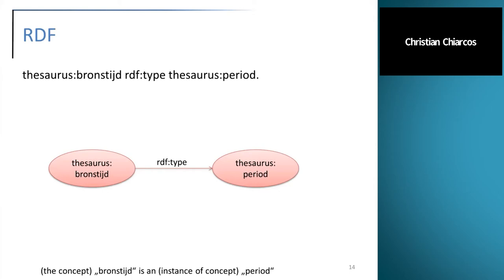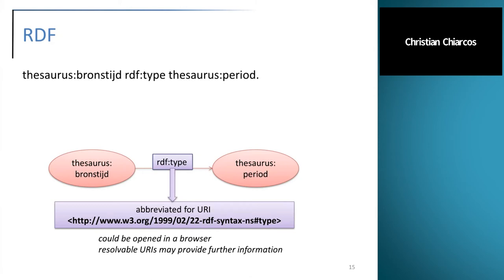Here's a brief example. In the first line you see a statement from a particular thesaurus that is apparently in Dutch, which says something about the Bronze Age. The property is rdf:type, meaning we assign this individual a particular type or category — in this case a period. So this basically means that the Bronze Age is a period. You see it in two ways: one is a textual representation in the Turtle format, one of the standard serializations of RDF, and a graphical view. Namespace prefixes are used to abbreviate URIs, but they can be expanded — for example, rdf: expands to an HTTP path you can actually type into your browser.